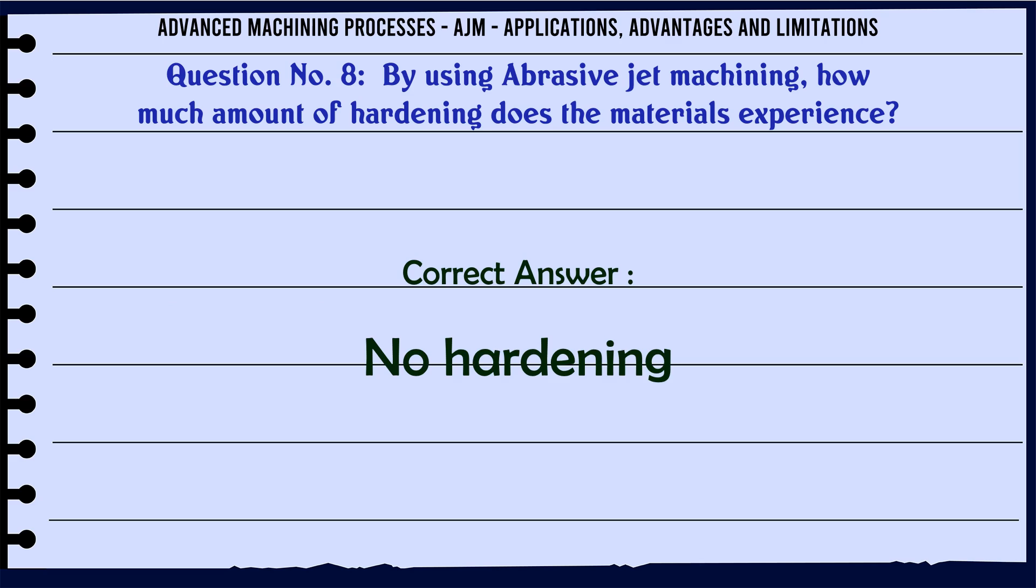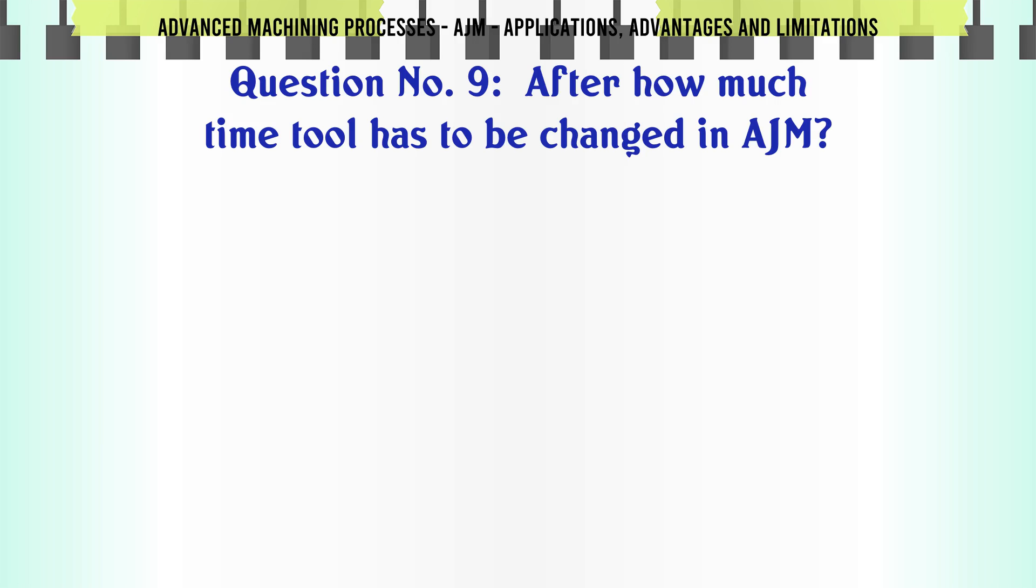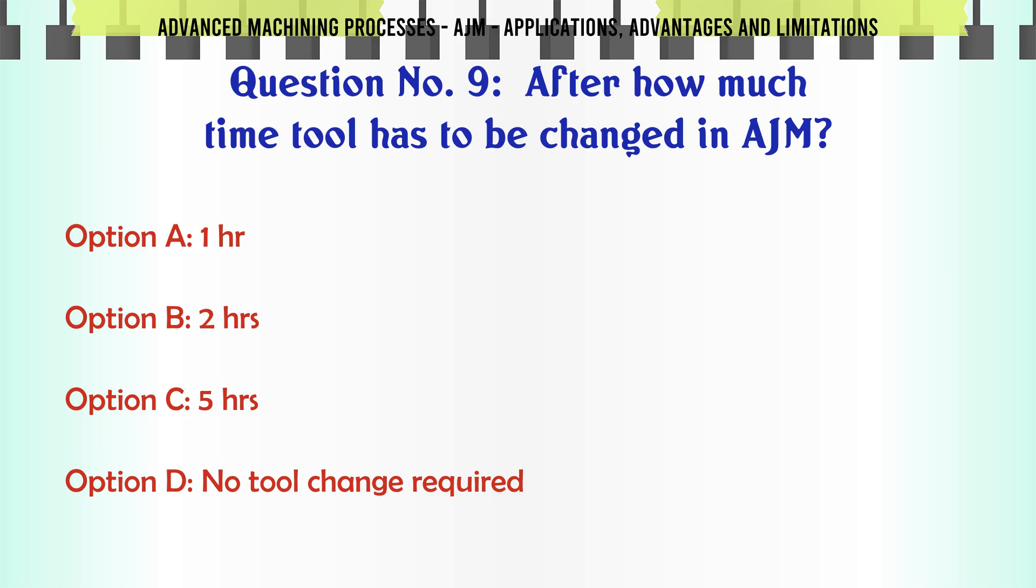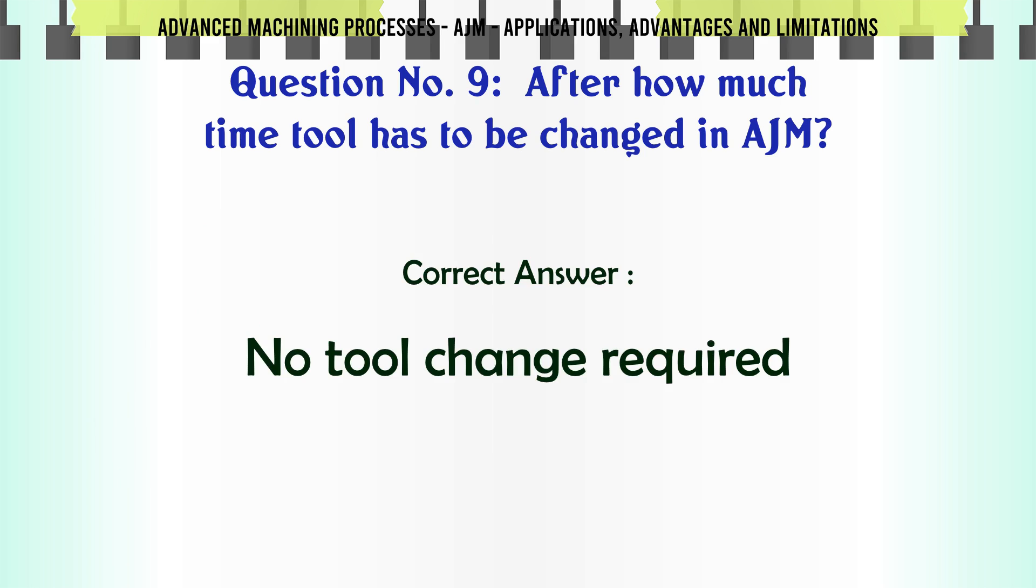After how much time does the tool have to be changed in AJM? Option A: 1 hour. Option B: 2 hours. Option C: 5 hours. Option D: No tool change required. The correct answer is no tool change required.